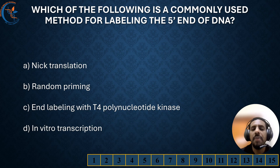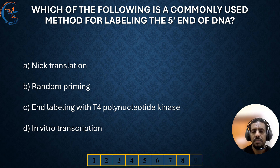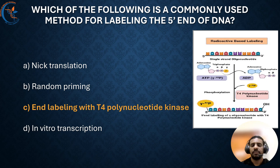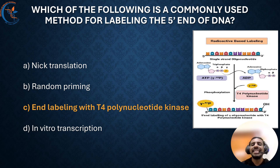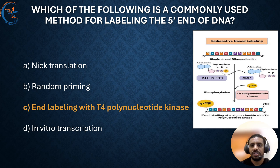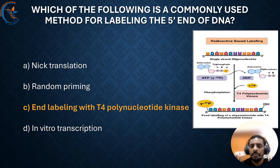Which of the following is the commonly used method for labeling the 5' end of DNA? The correct answer is end labeling with T4 polynucleotide kinase. T4 polynucleotide kinase is an enzyme that labels the 5' end of DNA by transferring a phosphate group from ATP to that end of the DNA molecule, as seen in the image. This process is important for various applications such as labeling DNA for sequencing or hybridization experiments. By adding a phosphate group, the DNA becomes marked, allowing researchers to trace or study specific DNA sequences more easily.